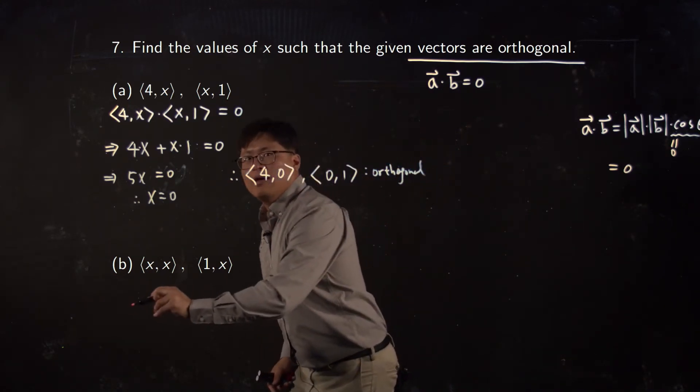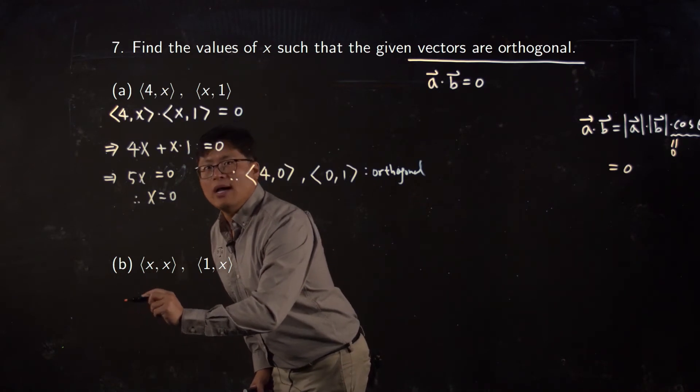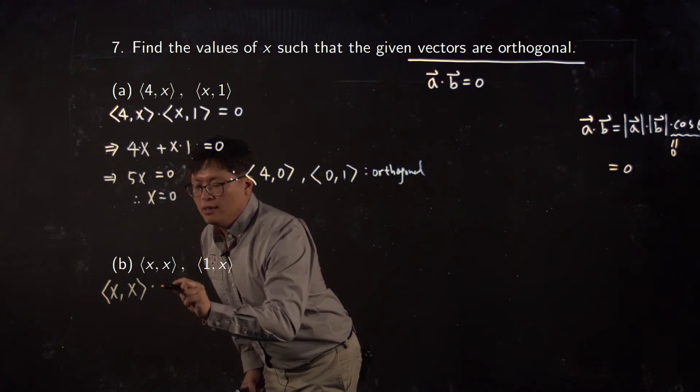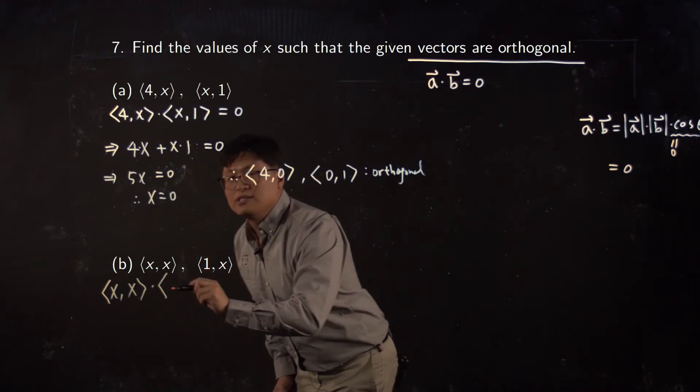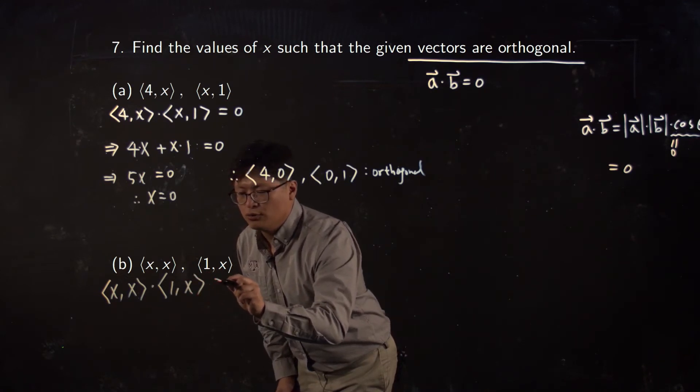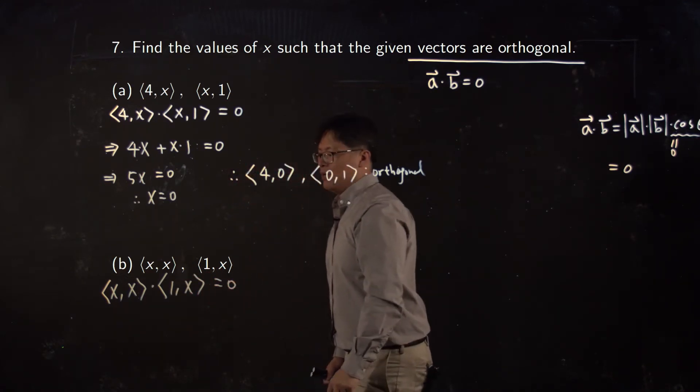So let me apply the same thing for problem b. Vector a is given by (x, x), so we're gonna set the first vector dot product between first and second vector, which is (1, x), equal to zero. And do the same operation.